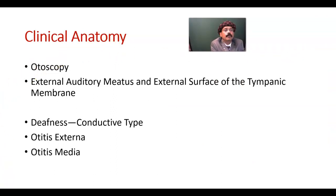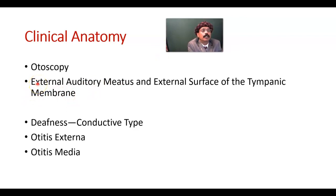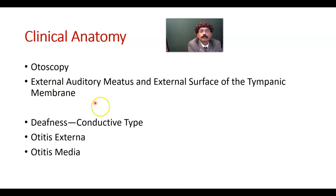In clinical anatomy, otoscopy is a very common practice. Using an otoscope, we look inside the external auditory meatus and examine the outer surface of the tympanic membrane. We can assess fluid collection in the middle ear cavity, bulging of the tympanic membrane, its color, and any perforations. Because the lateral cartilaginous part is S-shaped, when performing otoscopy we pull the ear upward and backward so that we can insert the otoscope. This allows us to assess infection inside the middle ear cavity as well as the external auditory meatus.